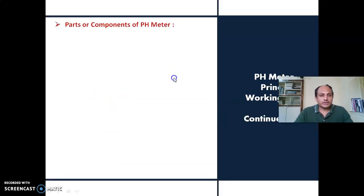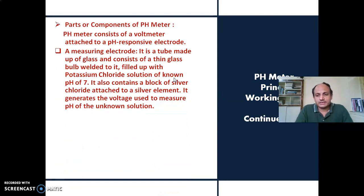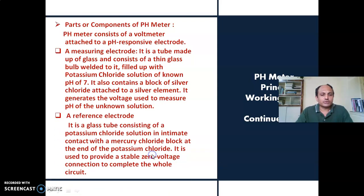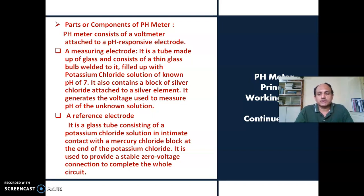In this next slide, we will see the different parts of the pH meter. As already mentioned, the pH meter consists of a voltmeter which is attached to a pH responsive electrode. Because whatever electrodes are there, they respond according to the pH — that's why these are called pH responsive electrodes.